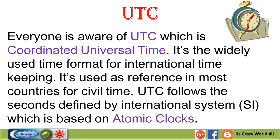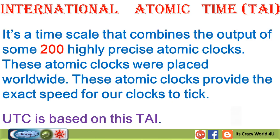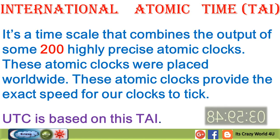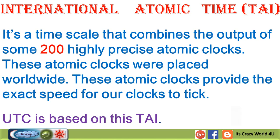UTC is used as a reference in most countries for civil time. UTC follows the seconds defined by the International System, SI, which is based on atomic clocks. International Atomic Time, TAI, is a time scale that combines the output of some 200 highly precise atomic clocks placed worldwide. These atomic clocks provide the exact speed for our clocks to tick, and UTC is based on this TAI.